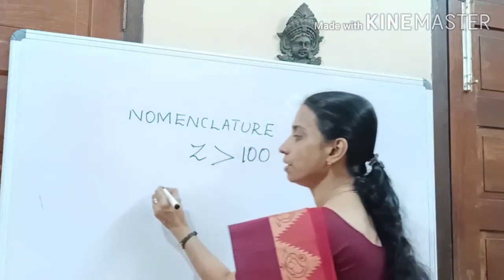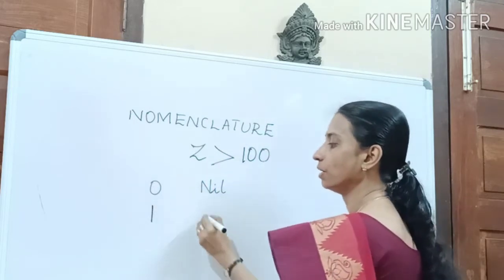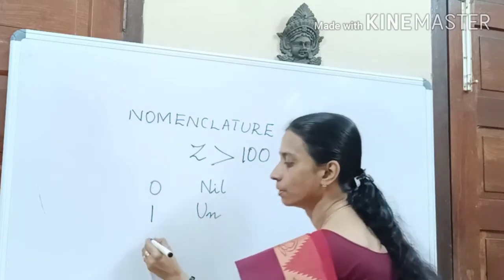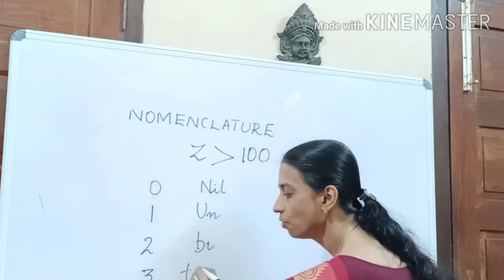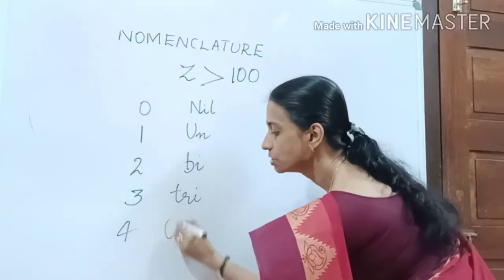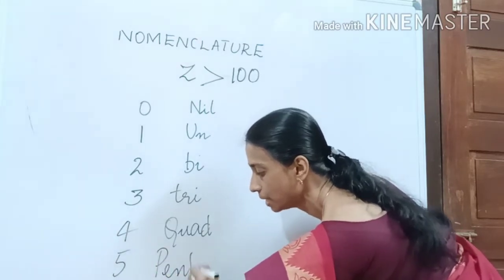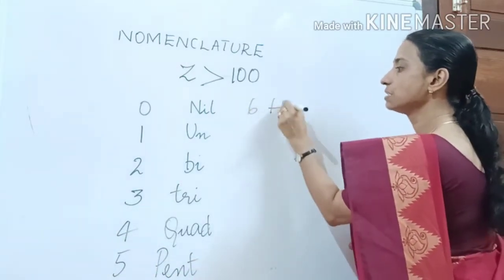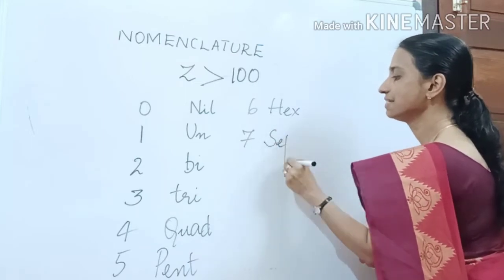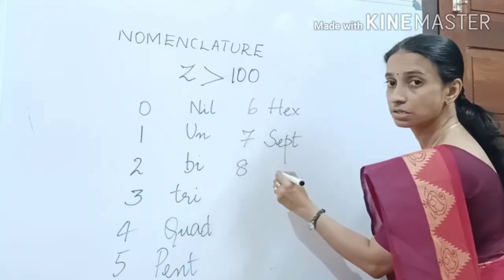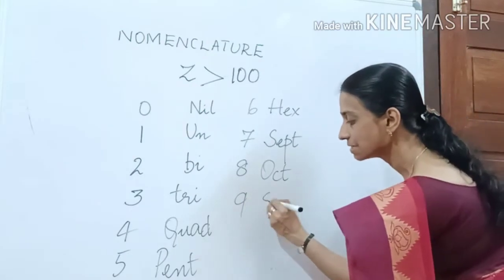If the number is 0, we have the prefix 'nil'. If it is 1, we have 'un'. 2 is 'bi'. 3 is 'tri'. 4 is special, which is called 'quad'. 5 is 'pent'. 6 is 'hex'. 7 is 'sept'. 8 is 'oct'. 9 is 'enn'.